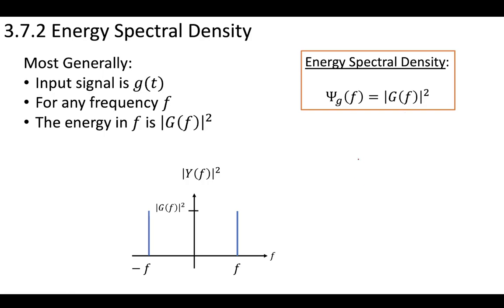For any frequency, you have an energy in this band. This is the energy spectral density, the energy per band.